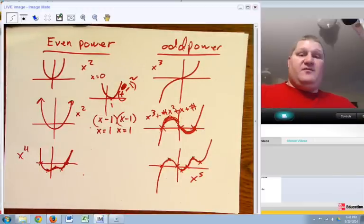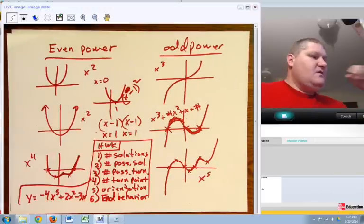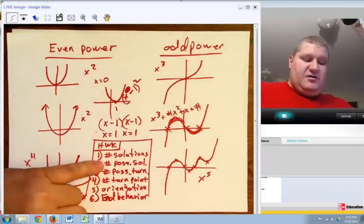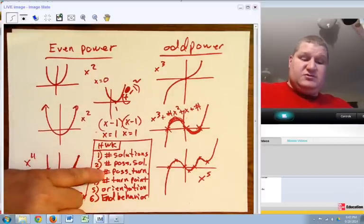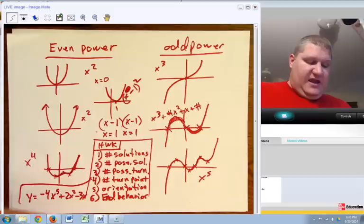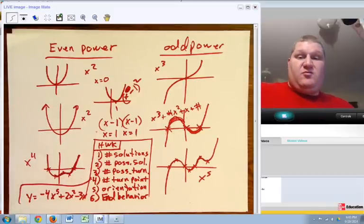And I'm going to put a few problems for you. Okay, there's the problem. I need you to tell me the number of solutions, number of possible solutions, number of possible turning points, actual number of turning points, the orientation, the end behavior of this graph, and be able to explain why based on information from the equation.